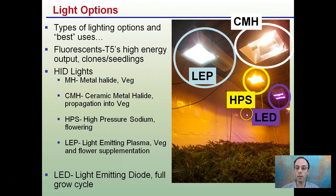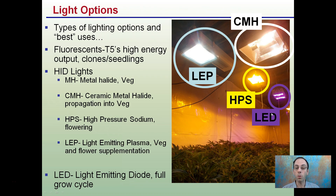And then LEDs, or light emitting diodes, can be used for the full grow cycle. This one's not necessarily a full spectrum — it's that purple and pink light. There are some that produce a very clean white light, and those are used for full spectrum.